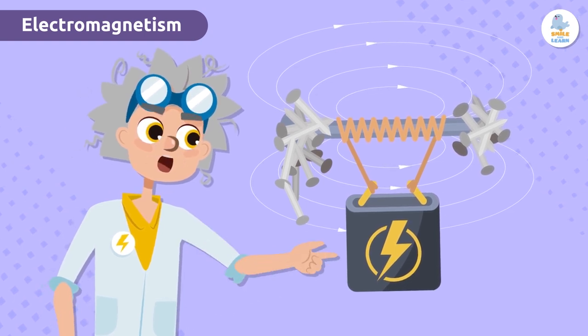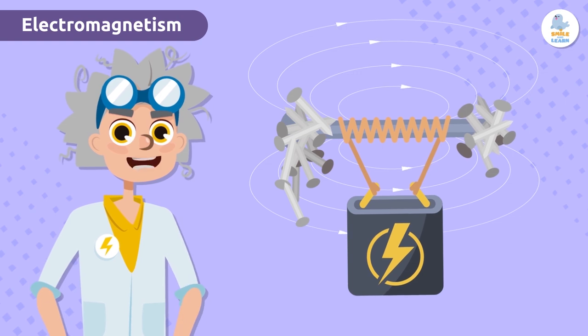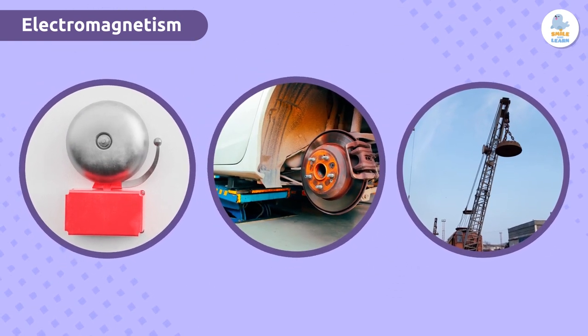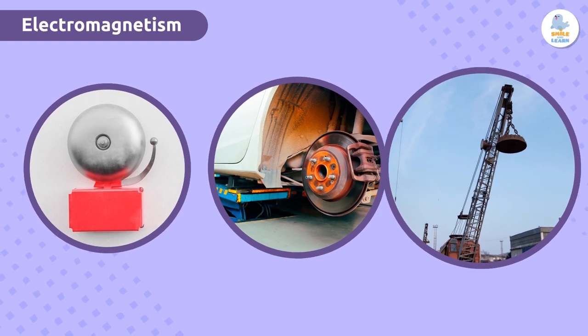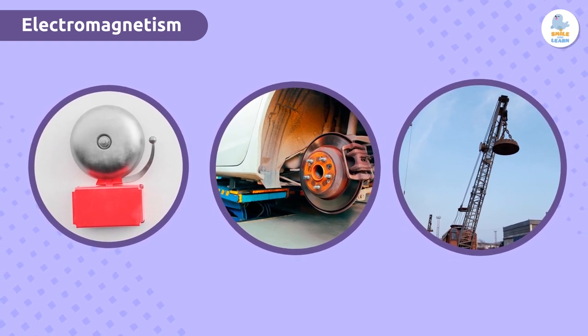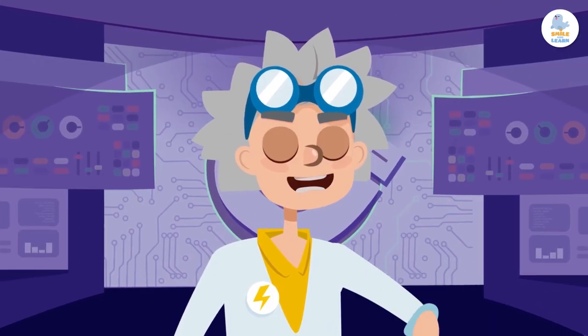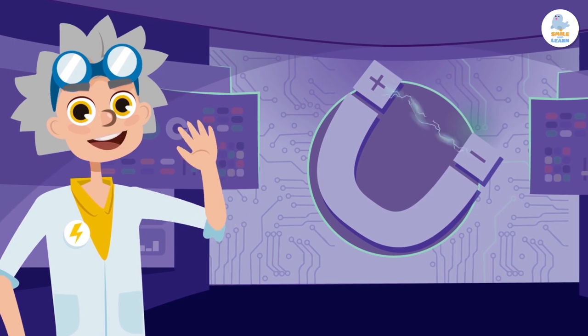We can also use electromagnets in a variety of ways. We can find them in bells or car brakes, but we can also find them in huge cranes they use to attract metal waste in landfills. Good job, friends! See you in the next episode. Bye-bye!